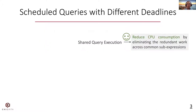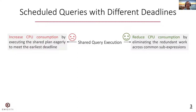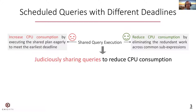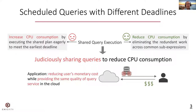Previous research shows that shared query execution can reduce CPU consumption by eliminating redundant work across common sub-expressions, but we find this is not always the case. For scheduled queries, shared query execution can even increase the CPU consumption because the shared plan needs to be executed eagerly to meet the earliest deadlines. Therefore, we consider judiciously sharing queries to reduce CPU consumption while not missing deadlines. This is particularly useful in today's pay-per-use model where we can reduce users' monetary costs while providing the same quality of query service.